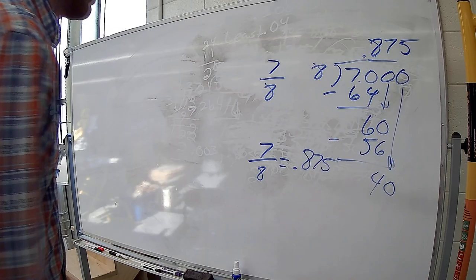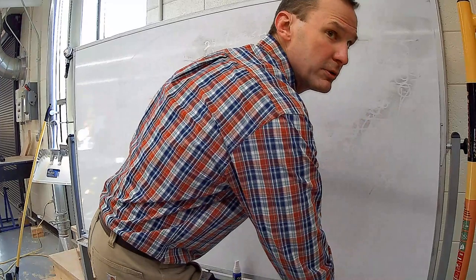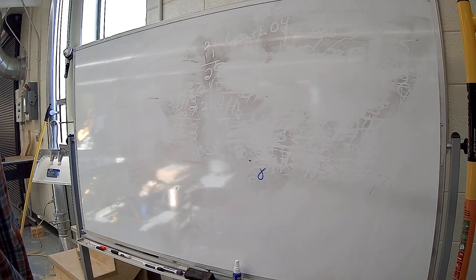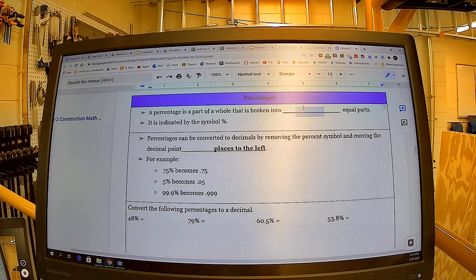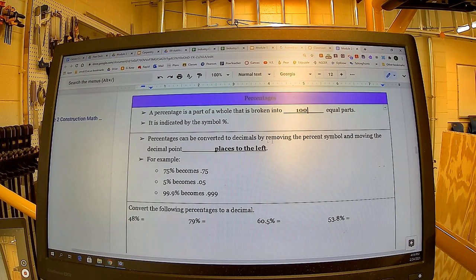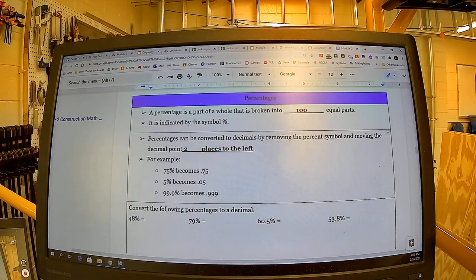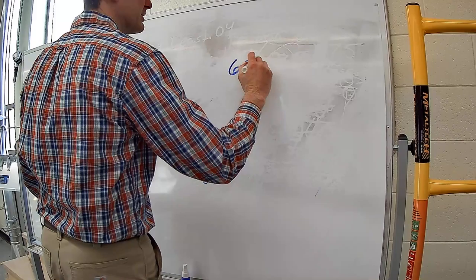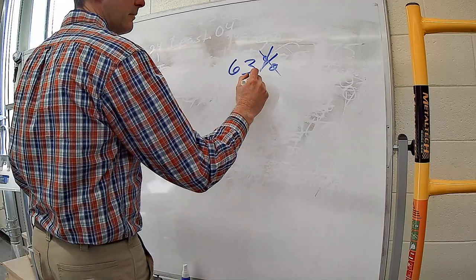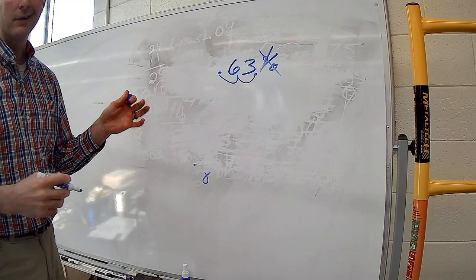Moving between percentages and decimals: a percentage is a part of a whole broken into 100 equal parts. To convert a percentage to a decimal, remove the percentage symbol and move the decimal point two places to the left. For example, 75% becomes 0.75. Here: 63% — remove the percent sign, place a decimal, and move it two places to the left. That's all you do, and your percentage becomes a decimal.